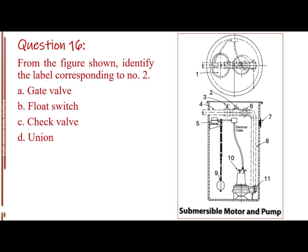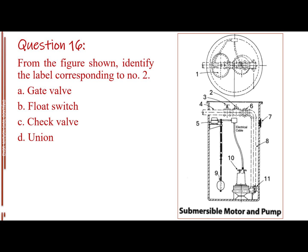Question number 16. From the figure shown, identify the label corresponding to number 2. Letter A, gate valve. Letter B, float switch. Letter C, check valve. Letter D, union. The answer is letter C, check valve.